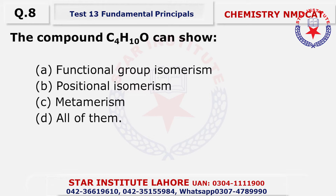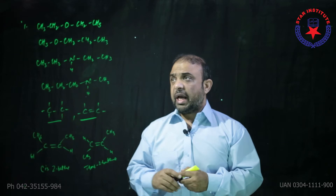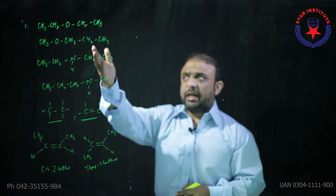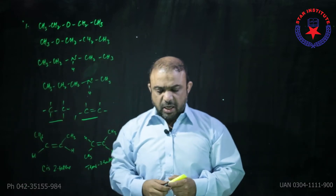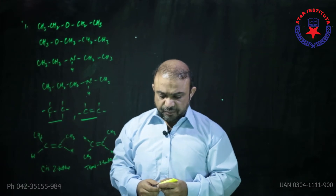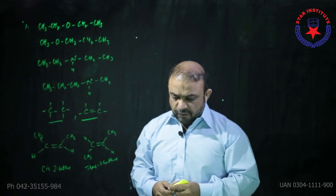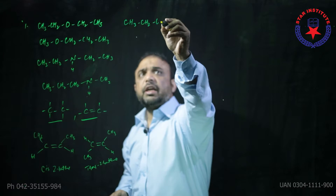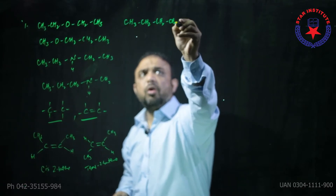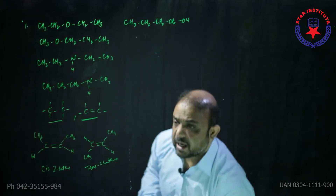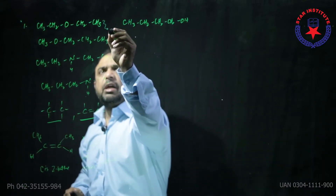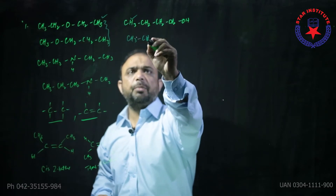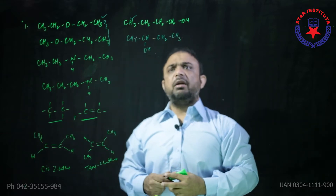Number eight: A compound C4H10O can show — C4H10O: there are four carbons, ten hydrogens, and one oxygen. So the ether — this is diethyl ether — it will show metamerism. But see what else it can do — it can also show functional group isomerism. Additionally, the alcohol formed here can show positional isomerism as well. So if you look carefully, between these two it shows metamerism, between those two there is functional group isomerism, and if the alcohol is arranged differently, positional isomerism is also shown. So all of them are possible — choice D.